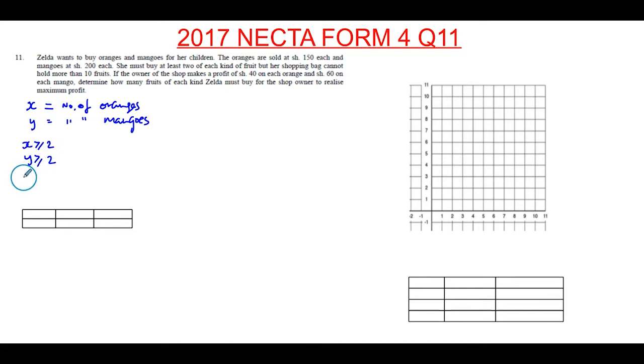And what else do you have? Well, her small bag cannot take more than 10 fruits. So she can take up to 10 or less, but not more. So that means the number of oranges plus the number of mangoes has to be less or equal to 10. So we have these constraints and we need to use them and see how this shop owner is going to maximize his profit.